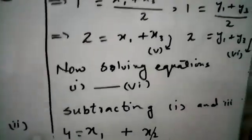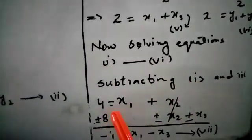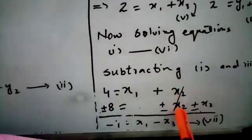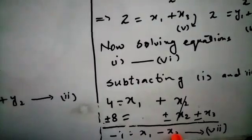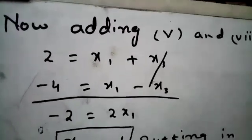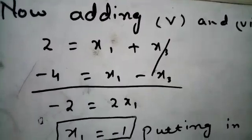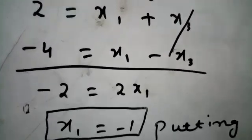To find x1, x2, x3, we solve equations 1, 3, and 5. Subtracting equation 3 from equation 1: 4 = x1 + x2 minus 8 = x2 + x3. x2 cancels out, giving 4 − 8 = −4 = x1 − x3 — this is equation number 7. Adding equations 5 and 7: 2 = x1 + x3 and −4 = x1 − x3. x3 cancels out, giving −2 = 2x1.